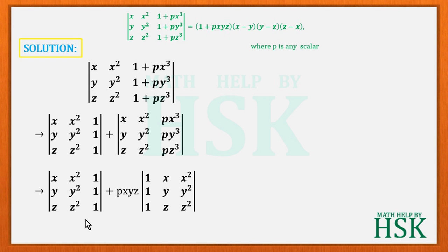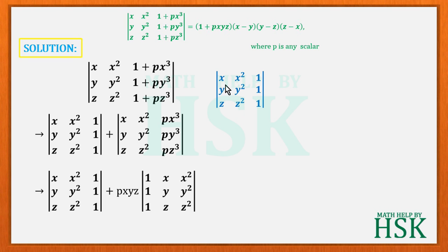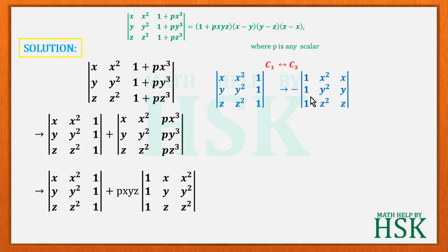An interesting thing emerges: the first determinant (x, x², 1; y, y², 1; z, z², 1) can be converted into a simpler form. If we interchange column 1 and column 3, we get a minus sign and the determinant (1, x², x; 1, y², y; 1, z², z).